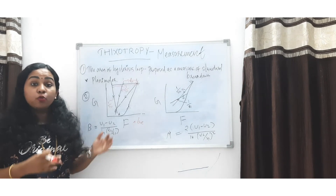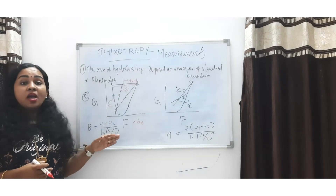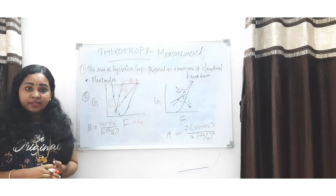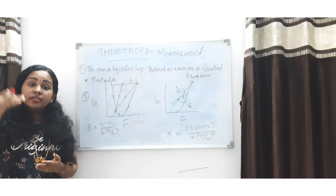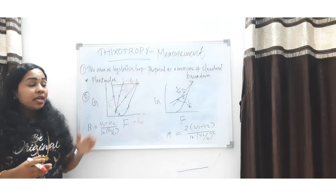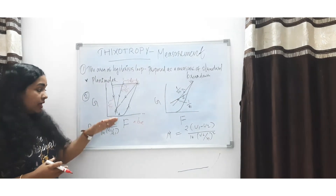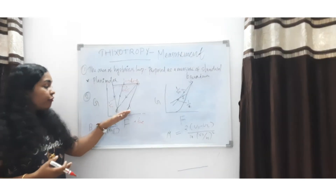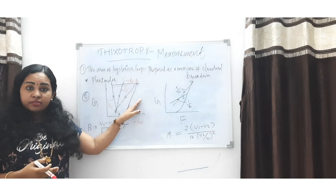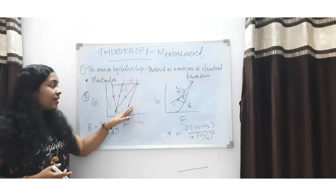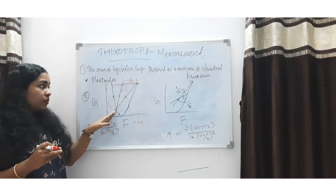For the second method, it is important to note that the rheogram of a thixotropic material largely depends on the rate at which shear is increased or decreased. Here you can see a rheogram for a plastic system where the shear rate increases progressively with shear stress up to a point B, then decreases.